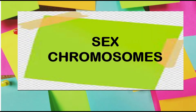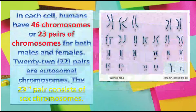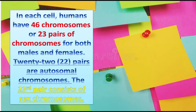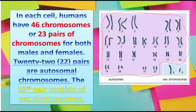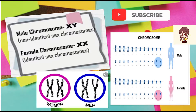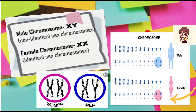Let's get started on sex chromosomes. Most humans have an X and Y determination that is responsible for the gender characterization of an individual. Sex chromosomes control whether the organism will be a male or a female. In each cell, humans have 46 chromosomes, or 23 pairs of chromosomes, for both males and females. 22 pairs are autosomal chromosomes. The 23rd pair consists of sex chromosomes. A male chromosome has a non-identical sex chromosome of X and Y, while the female has an identical chromosome of XX.